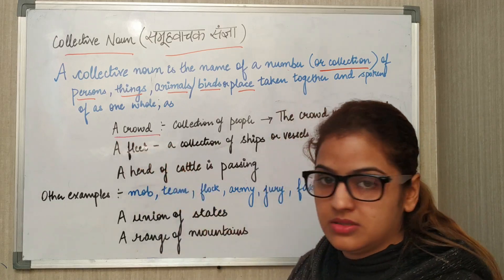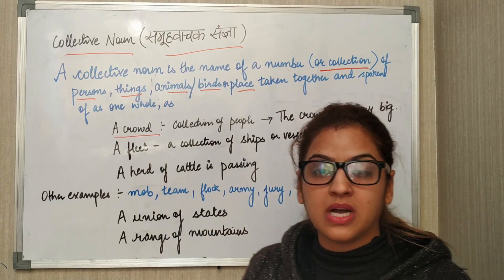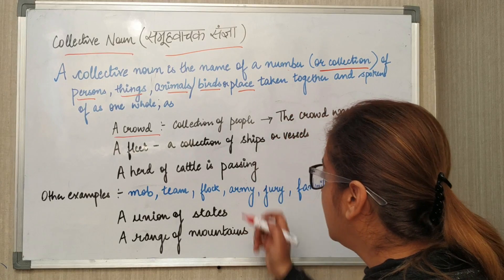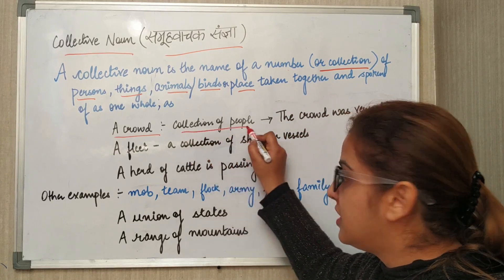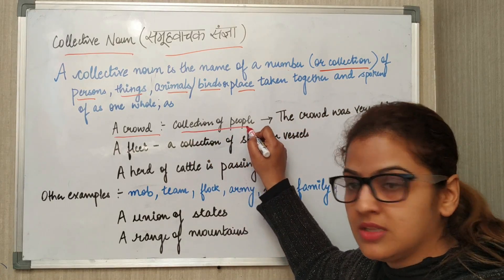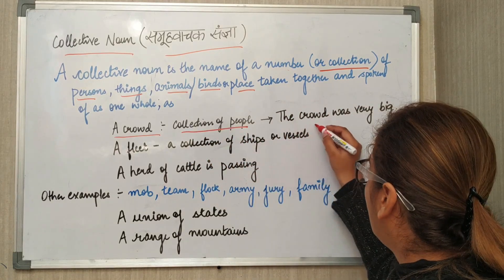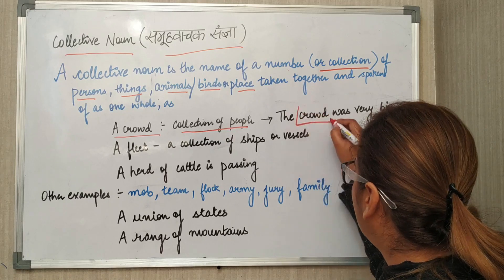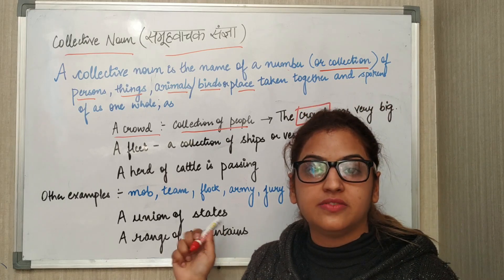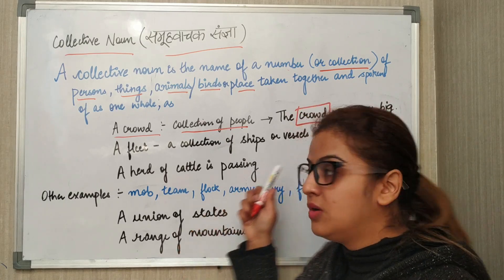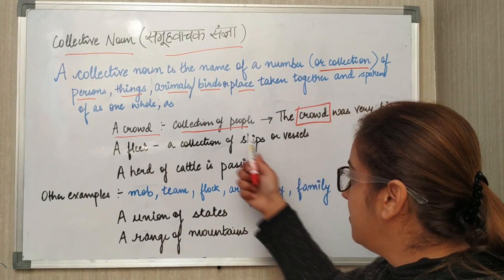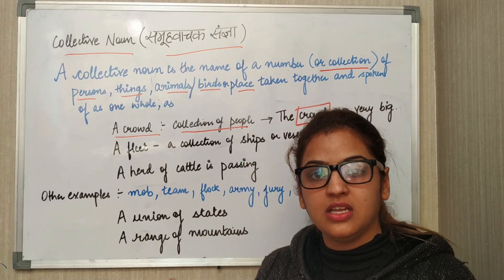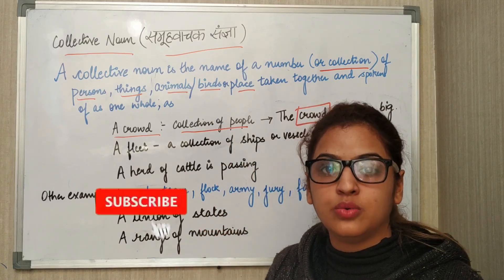Now, the crowd. When does the word crowd come? When it comes to the group. I have written the meaning as well. 'The crowd was very big.' Here, crowd is a collective noun. The crowd refers to people, so when it comes to people as a group, we use the word crowd.